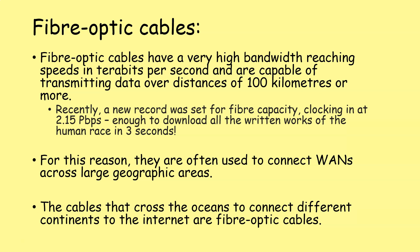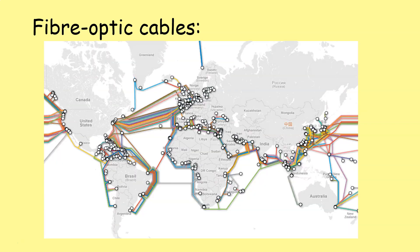For these reasons, we often use fiber optic to connect WANs across large geographic areas. The cables that cross oceans to connect different continents together are fiber optic cables. Fiber optic cables are also a lot slimmer and lighter than copper cables, so in the same space you can have multiple fiber optic cables each operating at terabits per second. You build in repeaters to amplify signals and can stretch that cable across oceans. Here we can see a map of submarine fiber optic cables that stretch across oceans to link all the different continents of the world together.